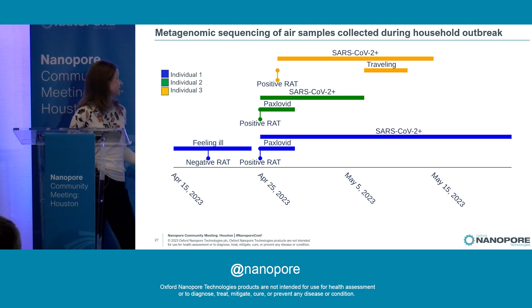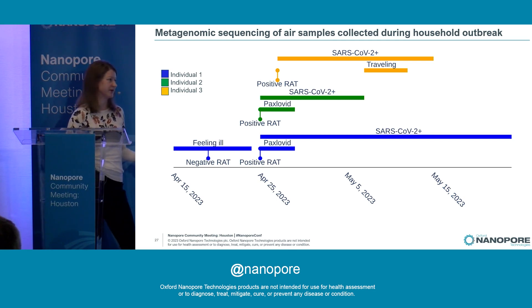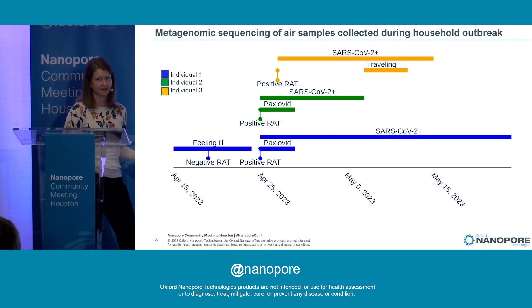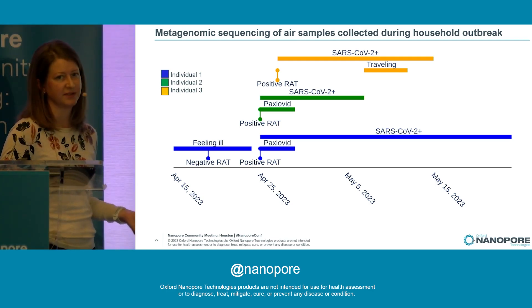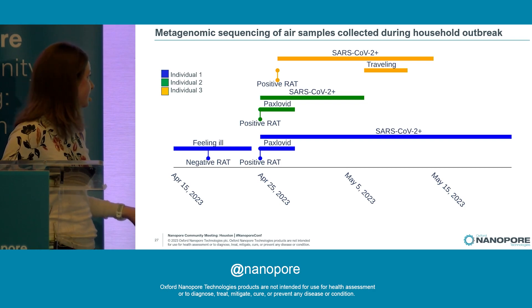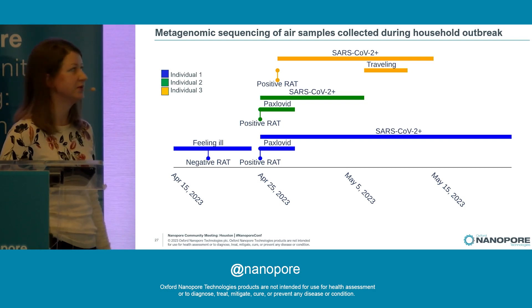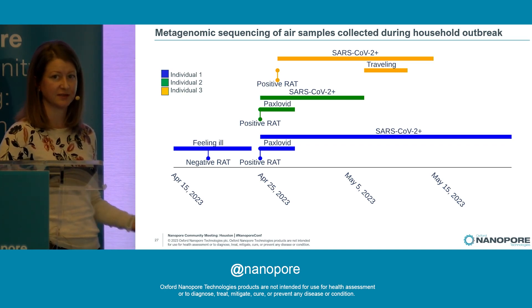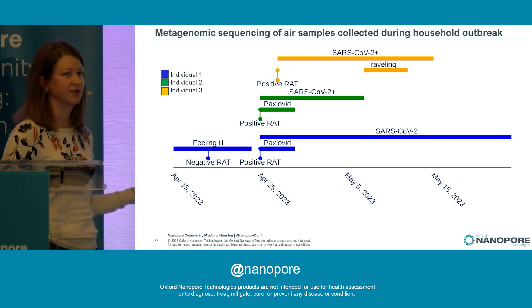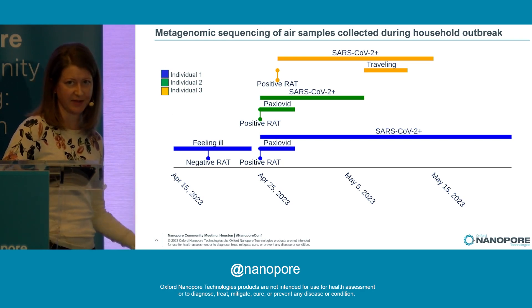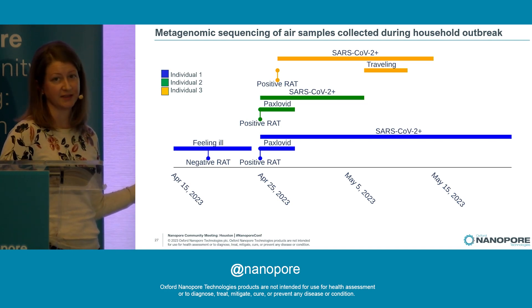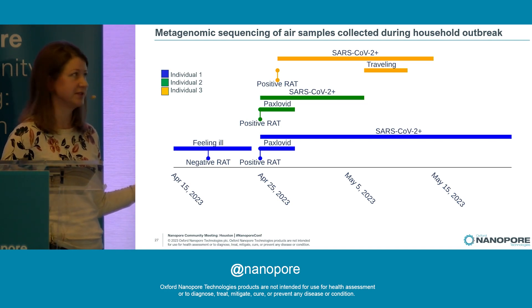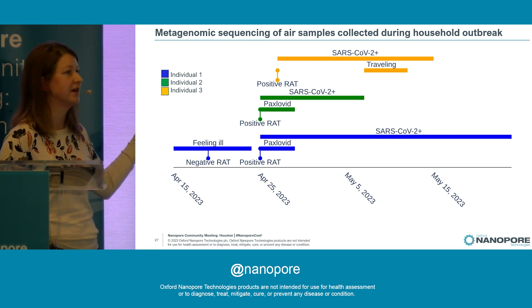I'm going to describe a household SARS-CoV-2 outbreak that occurred in the home of a lab member, where we used RapidSmart9n to generate sequencing samples that we then nanopore sequenced to identify the variant. Individual 1, shown in blue, started to feel ill and felt ill for about a week but was testing negative by rapid antigen tests that whole time. Individual 2, shown in green, began feeling ill and tested positive by rapid antigen test. At that point, Individual 1 retested and was also positive for SARS-CoV-2. Within a few days, a third individual in the household also tested positive.